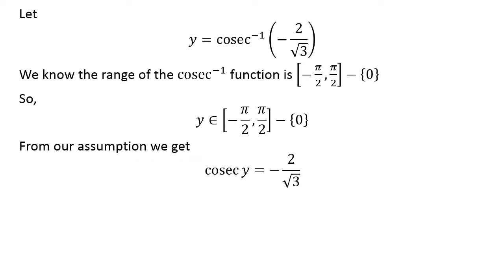By application of properties of inverse functions, we can rewrite y equals inverse cosecant of minus 2 upon square root of 3 as cosecant of y equals minus 2 upon square root of 3.